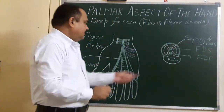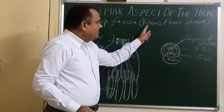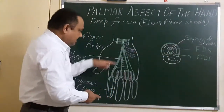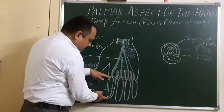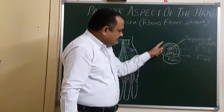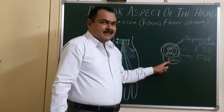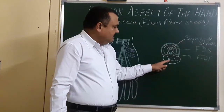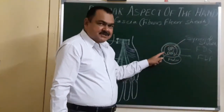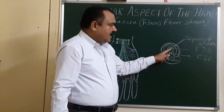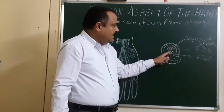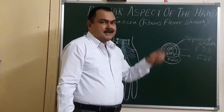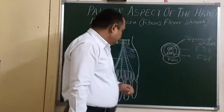So this fibrous flexor sheath extends along the phalanx and, together with the phalanx, it forms an osteofibrous tunnel. Passing through this osteofibrous tunnel are the tendons of flexor digitorum superficialis, the tendons of flexor digitorum profundus, and the synovial sheath which covers these tendons.